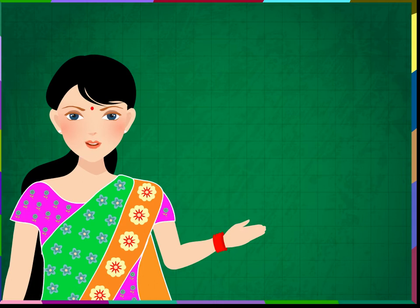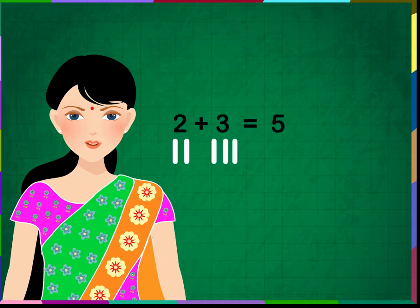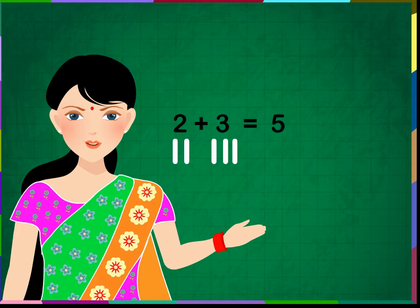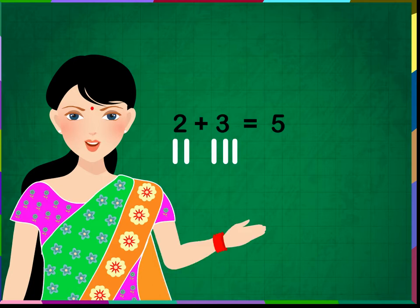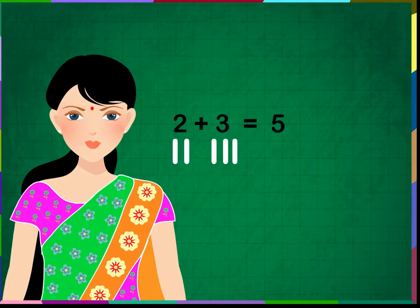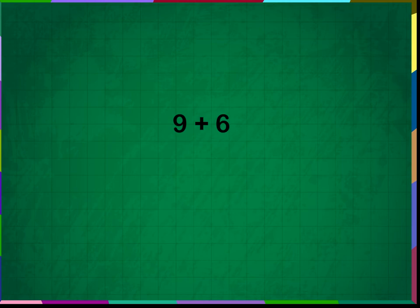Addition of numbers by drawing vertical lines. We know that we can add numbers by drawing vertical lines below the numbers and counting them all together. We have done such sums in our previous lesson. Let us do the same for bigger numbers.